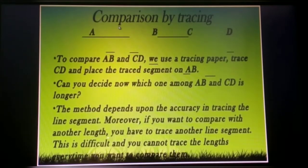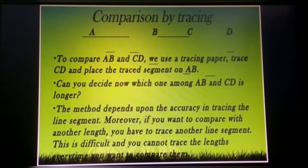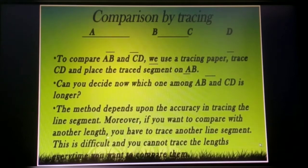Now comparing by tracing. To compare line segments AB and CD, we use tracing paper and trace CD, then place the traced segment on AB. Can you decide now which one — AB or CD — is longer? This method depends upon the accuracy in tracing the line segment. Moreover, if you want to compare with another line segment, you have to trace again. This is difficult and you cannot always trace the line accurately.